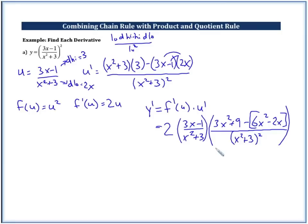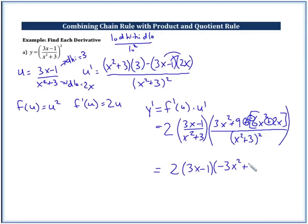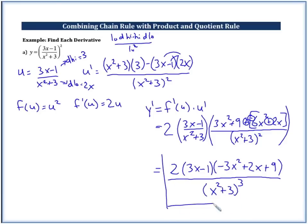Now let's see if we can simplify any more. In the numerator we're going to have 2 times 3x minus 1, and in this case we get minus 6x plus 2x. So 3x squared minus 6x squared is negative 3x squared, and then we still have plus 2x and plus 9. This is all over — here we have x squared plus 3 times x squared plus 3 squared, so now we actually have 3 of those factors: x squared plus 3 cubed. And that would be the final answer.